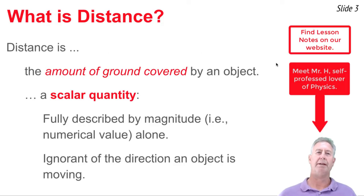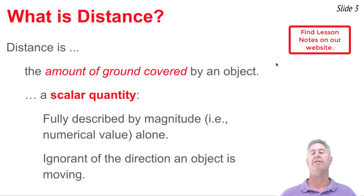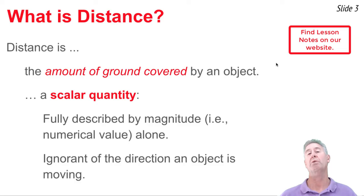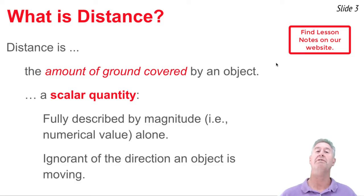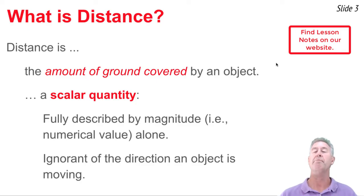We're going to begin by talking about distance. Distance is the amount of ground covered by an object. It's a scalar quantity, and when calling something a scalar quantity in physics, what we mean is a quantity that is ignorant of direction. It's fully described by magnitude alone — magnitude or numerical value.